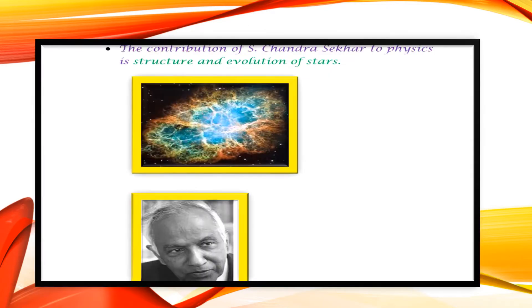Subramanian Chandrasekhar was an Indian-American astrophysicist. His theoretical studies of the physical processes important to the structure and evolution of stars led him to receive the Nobel Prize in 1983.